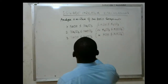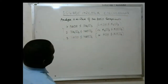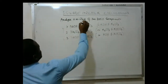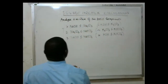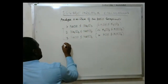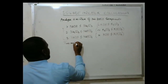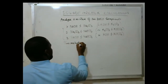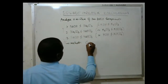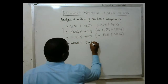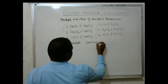We have two methods of analyzing these mixtures using the double indicator method. The first is the continuous method, and the second is the separate method.